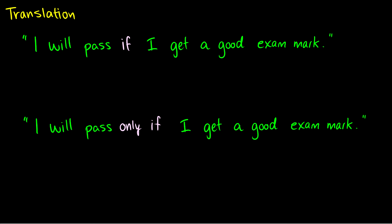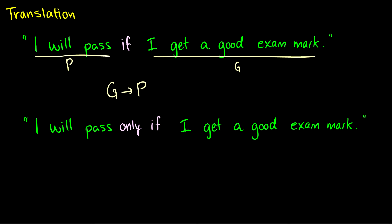Let's do some practice translating. 'I will pass if I get a good exam mark' — let P be 'I will pass' and G be 'I get a good exam mark.' This translates to G arrow P: if I get a good exam mark, then I will pass. So if you get a good exam mark and you don't pass, the statement is false.